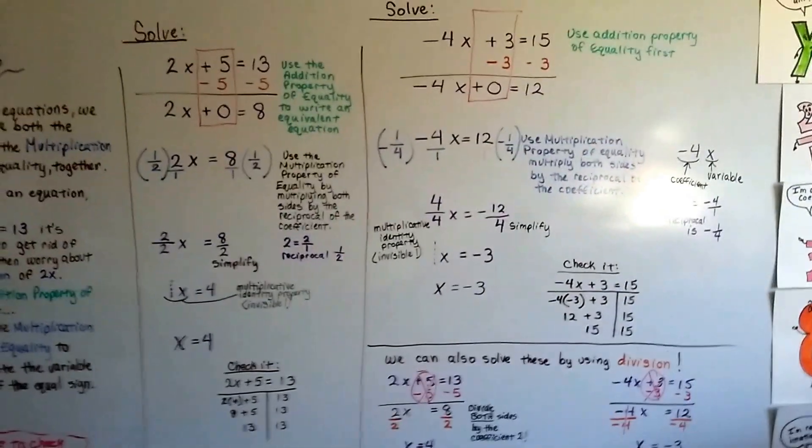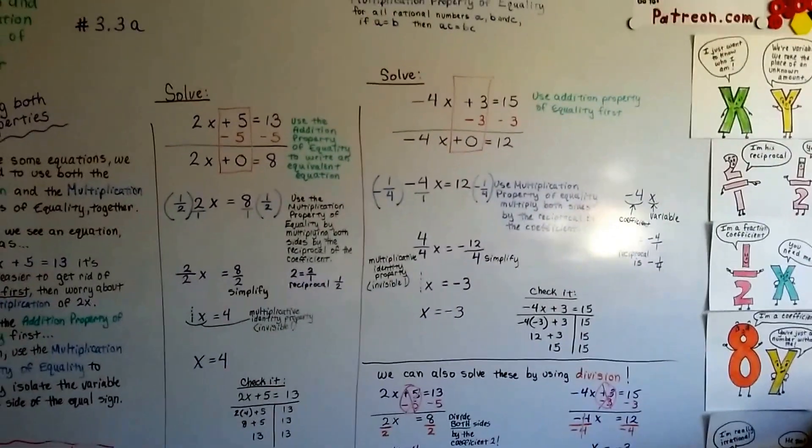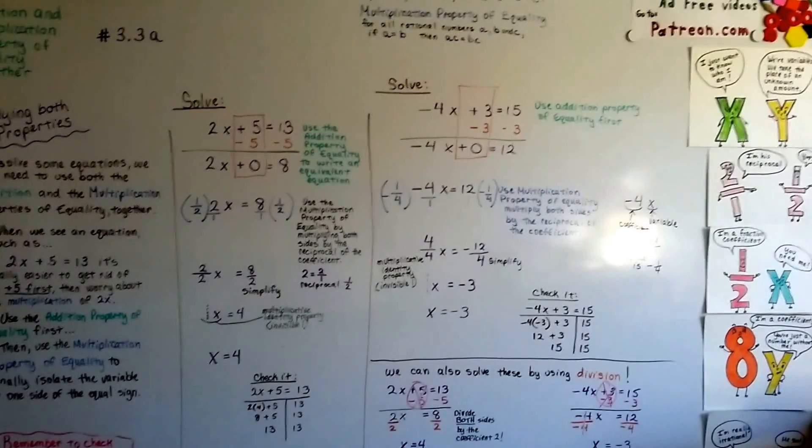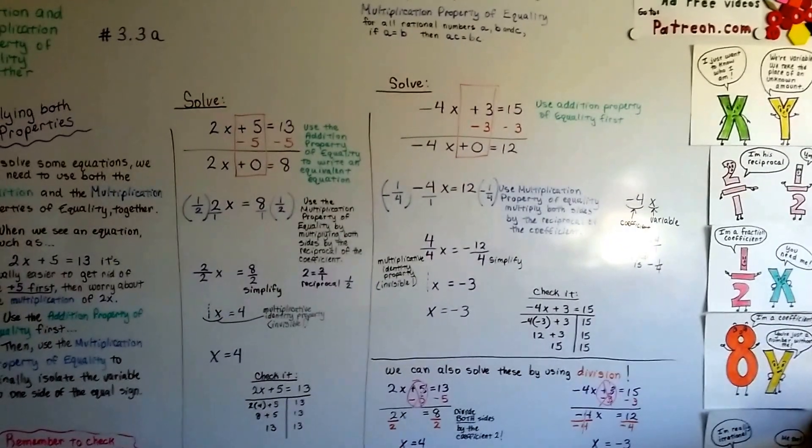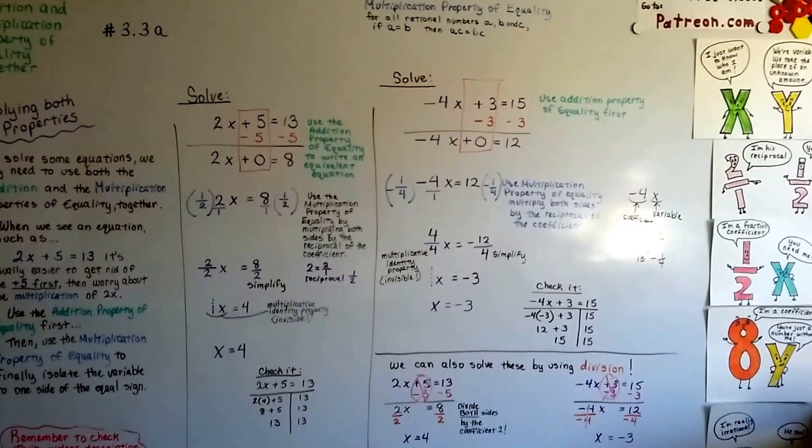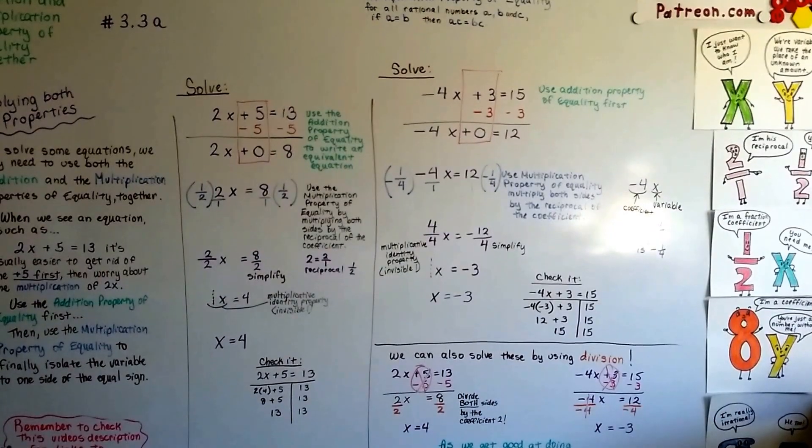So that would be using both of the properties together. Now, in the next video, 3.3b, we're going to talk about collecting and combining like terms and using both of these properties together when we've got a crazy equation with lots of terms in it. I hope I'll see you there. Bye.